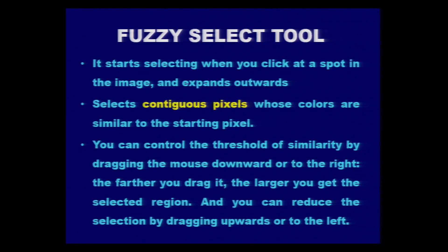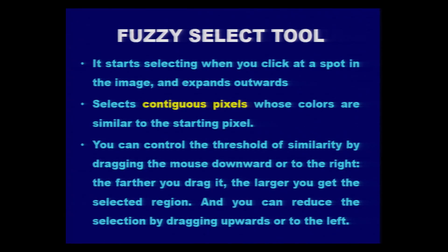You can also control the threshold of similarity by dragging the mouse downwards or to the right. Threshold is one very essential property of the fuzzy select tool — by selecting the value for threshold, we set the extent of similar pixels to be selected. The larger the threshold value, the larger the selected region. You can also reduce the selection by dragging upwards or towards the left.